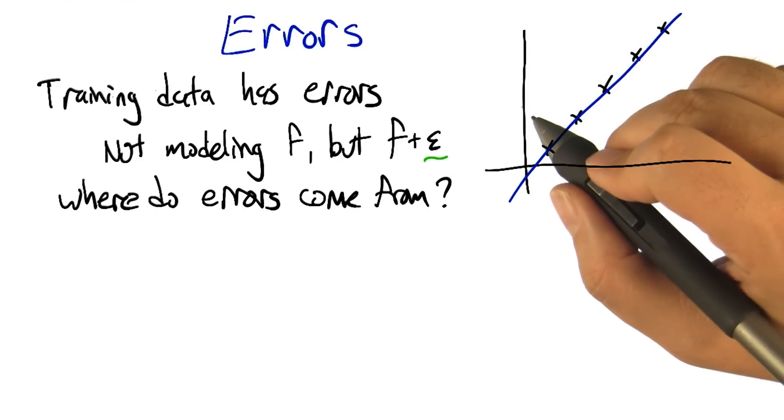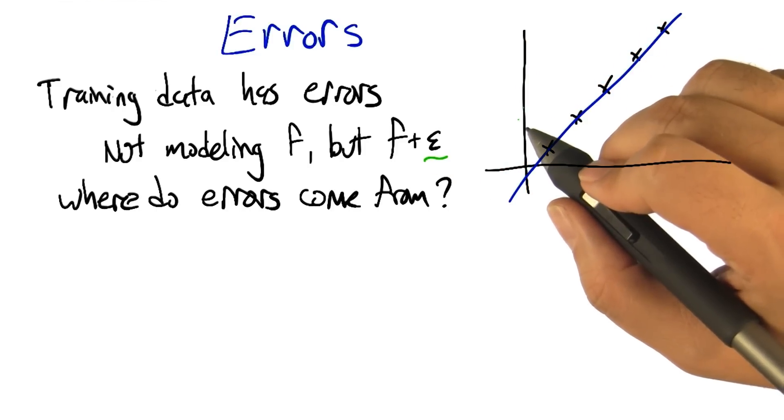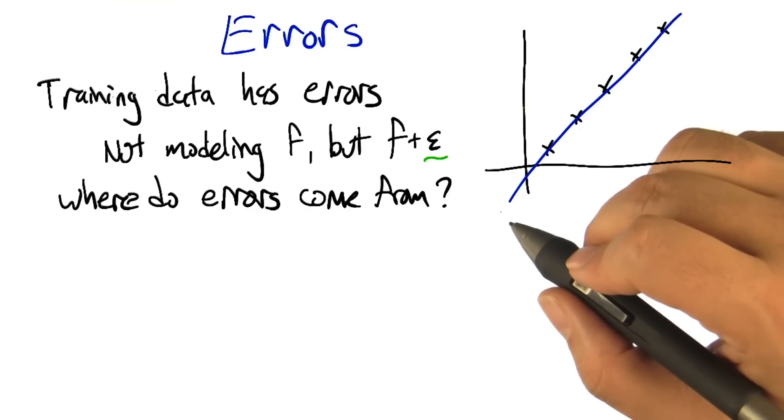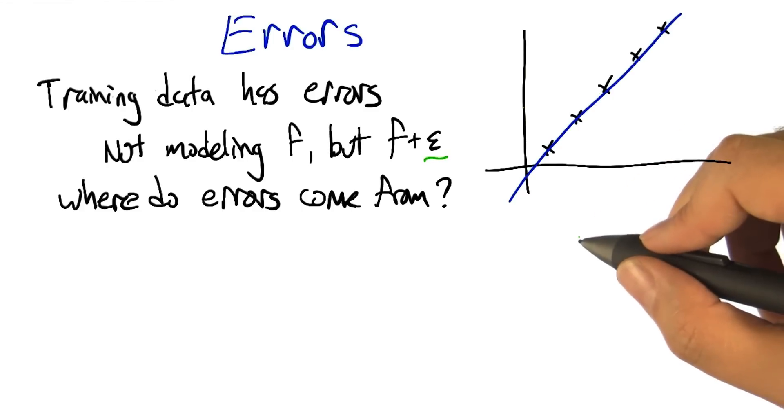So I think it's reasonable to think about where do these errors come from? What do you think, Charles? Why is it that we're trying to fit data that has errors in it? Can't we just have no errors? I would like to have no errors. Certainly my code has no errors. Well, so let's see, where might errors come from?